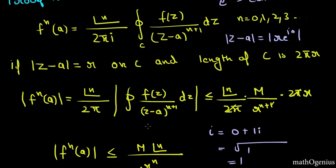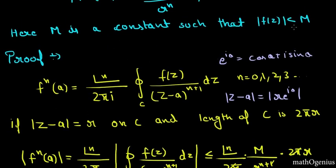Here we take the mod of this and mod of z minus a is equal to r. So it becomes r to the n plus 1 and here mod of f(z) is equal to 2 pi r times M. We said M is a constant such that mod of f(z) is less than M.